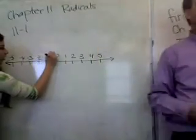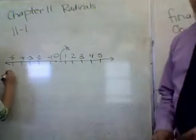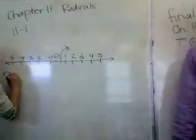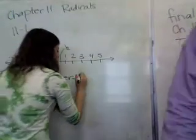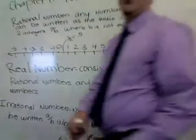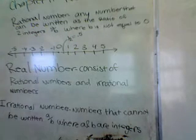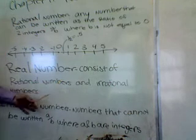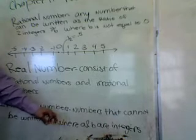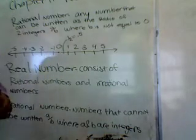Now we're going to talk about rational and irrational numbers. Real numbers consist of rational numbers and irrational numbers. Please write that down. Rational numbers are any numbers that can be written as the ratio of two integers, A over B, where A and B are integers. So A could be negative 3 and B could be 6, giving you negative one half — that is a rational number. Irrational numbers cannot be written as A over B where A and B are integers. Let's go over some examples.